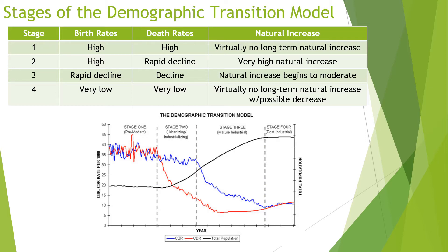In stage three, birth rates start to come down — not as low as death rates, so population is still growing but more slowly. Birth rates decline because women become educated and have access to contraceptives. In stage four, both birth rates and death rates are low, so population doesn't change much, though total population is high from stages two and three. Stage five, which countries like Japan have entered, is when birth rates drop below death rates — women have fewer than two children — and population actually starts to decline.